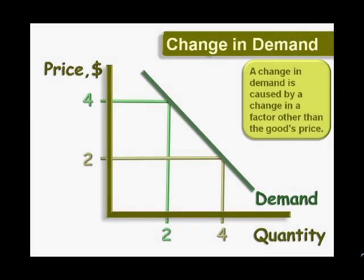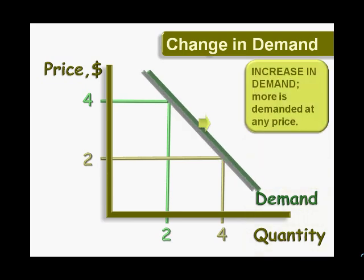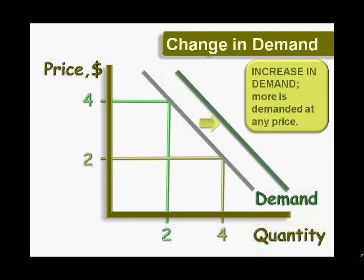When market conditions change, it is always the result of changes or shifts in demand, supply, or both. A change in demand is caused by a change in a demand factor other than the good's price. Rather than moving along a demand curve in response to a change in price, the demand curve shifts.